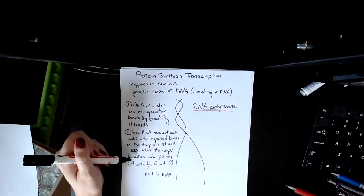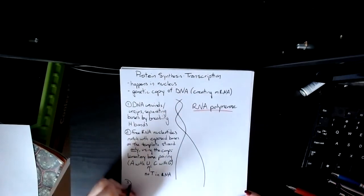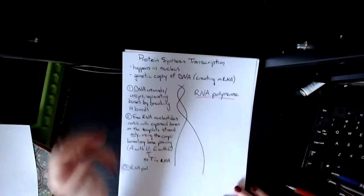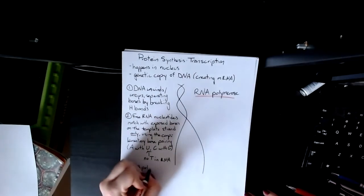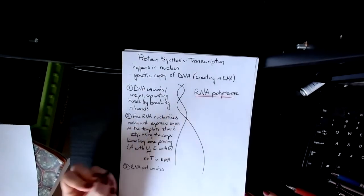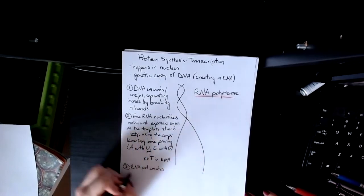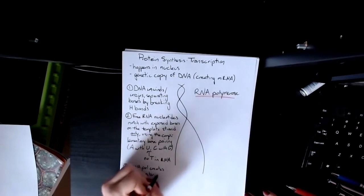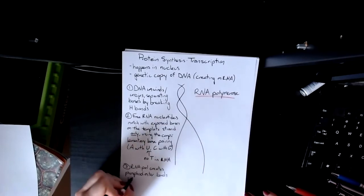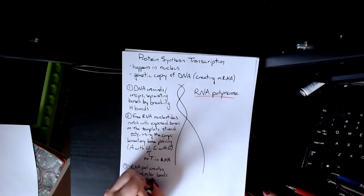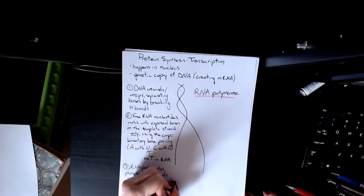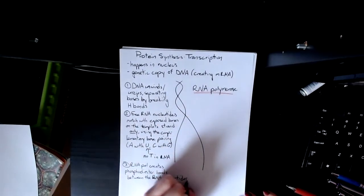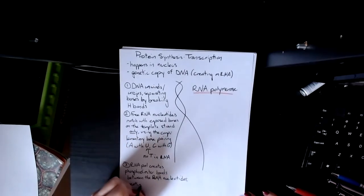The free RNA nucleotides match with the exposed bases, and then you have RNA polymerase, which I'm going to abbreviate RNA-pol, binds these free nucleotides together. So it creates phosphodiester bonds, or catalyzes as well since it is an enzyme, between the RNA nucleotides. And that is what leads to the creation of the mRNA strand.